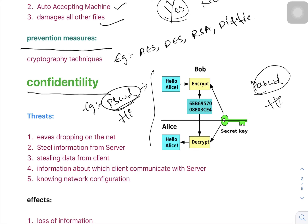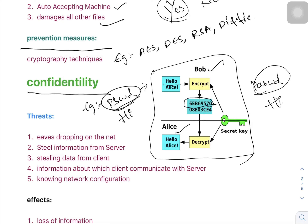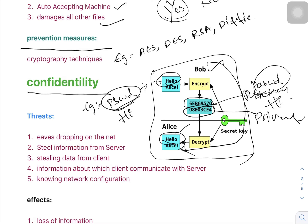Here is a clear example of confidentiality: there are two friends, Bob and Alice. Bob wants to send the message 'Hello' to Alice. To encrypt the message, he uses a public key. With the help of this public key, he encrypts the message. Alice then uses her private key to decrypt and receive the message — which is 'Hello.' The hacker cannot identify the message because it is a scrambled, unreadable sentence.